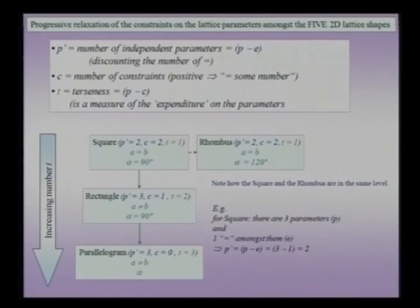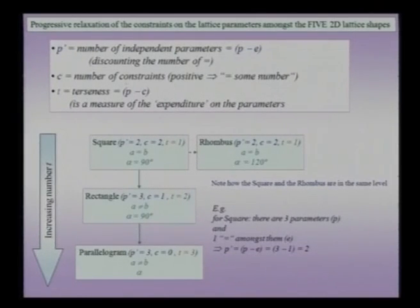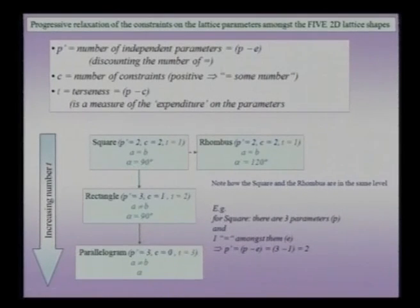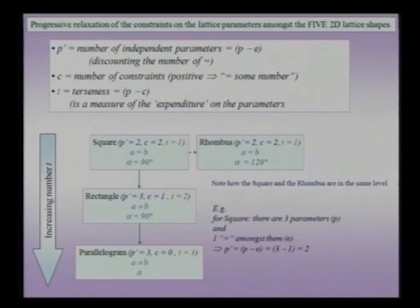The terseness value is the difference between the number of parameters (3 in two dimensions) and the number of constraints imposed for a certain kind of lattice. For the square, there are two constraints: A equals B, and alpha equals 90 degrees — giving terseness 3 minus 2 equals 1. For the rhombus, the constraints are A equals B and alpha equals 120 degrees — also giving terseness 1. The square and rhombus are at the same level in terms of parameter expenditure. For the rectangle, there is only one constraint on the angle, giving terseness 3 minus 1 equals 2. The parallelogram has no constraints, so terseness is 3 minus 0 equals 3, and lies at the bottom of the hierarchy. This classification is based purely on parameter expenditure, not on symmetry.